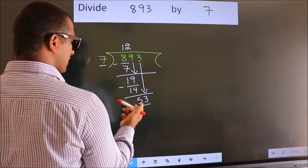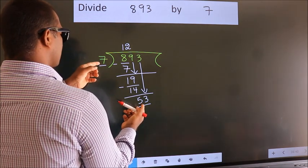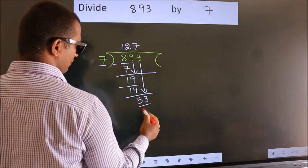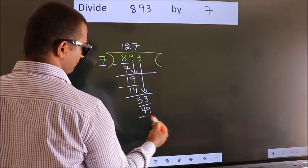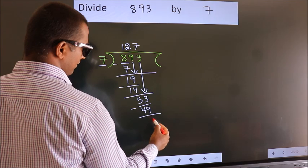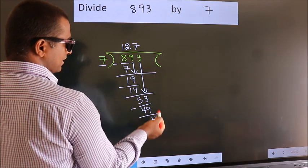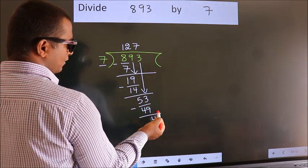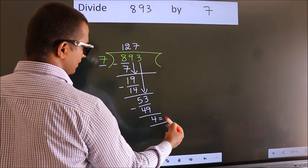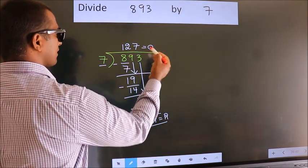A number close to 53 in the 7 times table is 7 sevens 49. Now we subtract. We get 4. No more numbers to bring down, so we stop here. This is our remainder. This is our quotient.